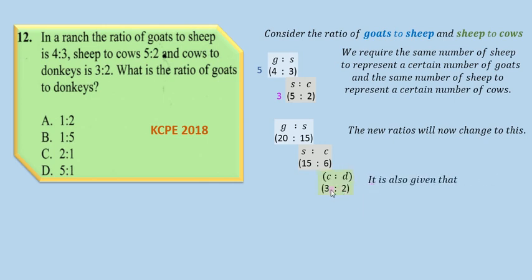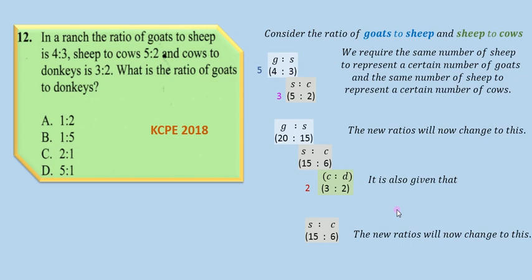It is also given that the ratio of cows to donkeys is 3:2. Just as we did earlier, we need the same number of cows to represent both sheep and donkeys. To do this, we multiply the cows-to-donkeys ratio by 2 to get 6 cows and 4 donkeys.